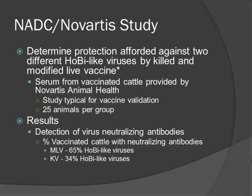We were looking for any neutralizing antibodies — no cutoff level. For the killed vaccine, administered as two doses two weeks apart, 34% of animals had neutralizing antibody against Hobi-like virus. For the modified live vaccine (one dose), 65% had neutralizing antibody against Hobi-like virus. This is practical, real-world data — what a cow will see after vaccination. It tells us the vaccines we have may not work particularly well against Hobi-like viruses.